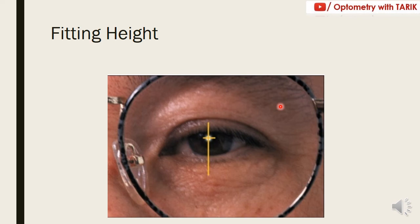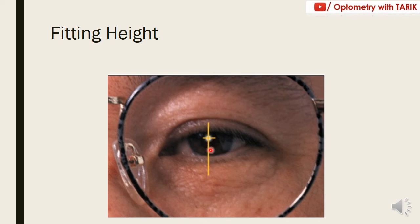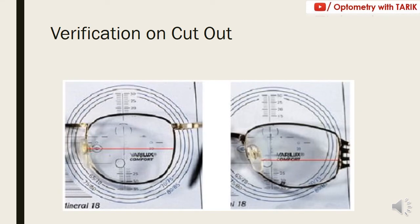Once the marking is done, you can identify the fitting height to be given. Depending on the fitting height, the corridor size is determined — a larger fitting height gives a longer corridor with a more gradual progression, while a shorter fitting height gives a shorter corridor with a more rapid progression in power. The fitting height is measured from the center of the pupil down to the lower edge of the frame, and that measurement in millimeters is taken as your fitting height.